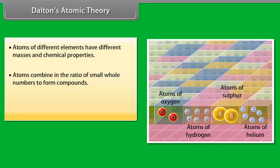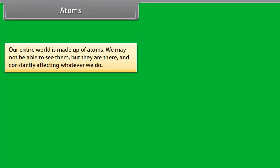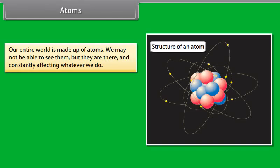3. Atoms of a given element are identical in mass and chemical properties. 4. Atoms of different elements have different masses and chemical properties.